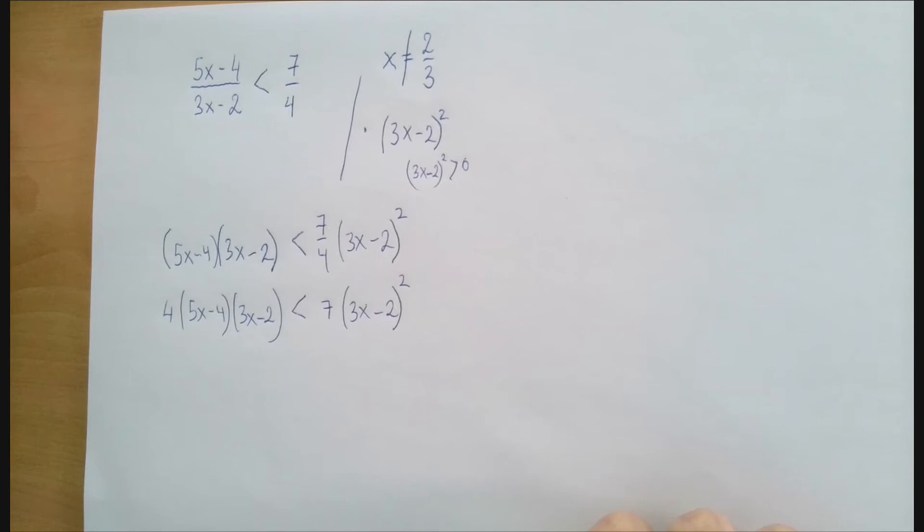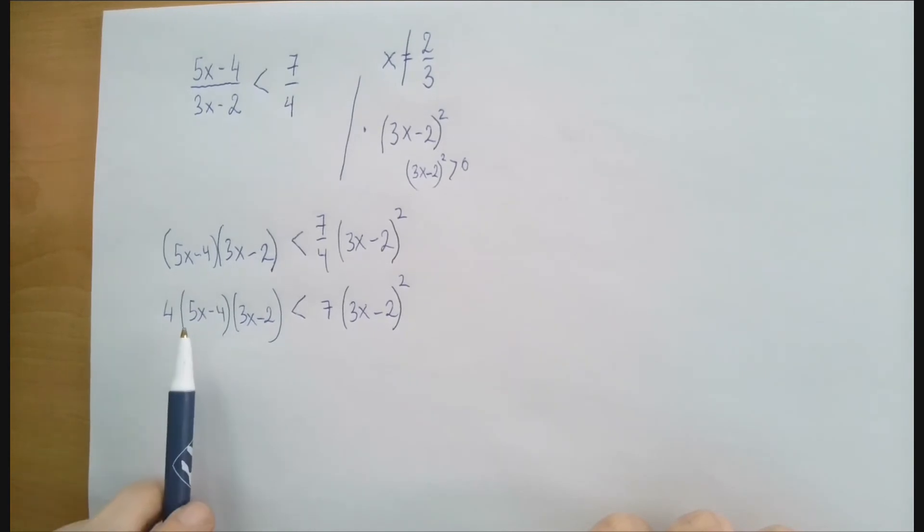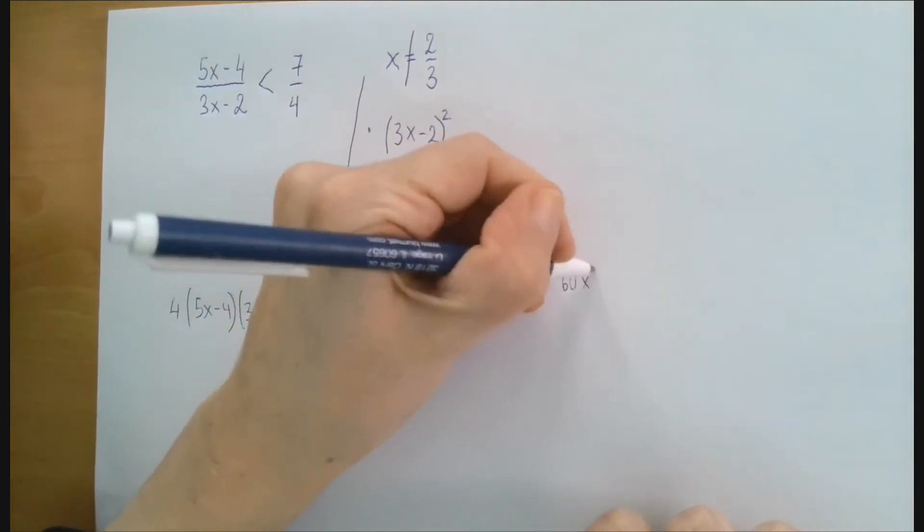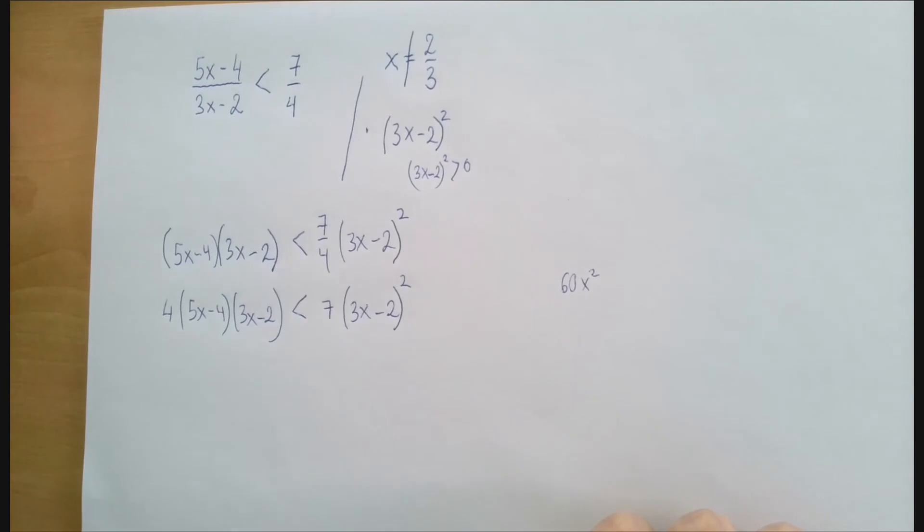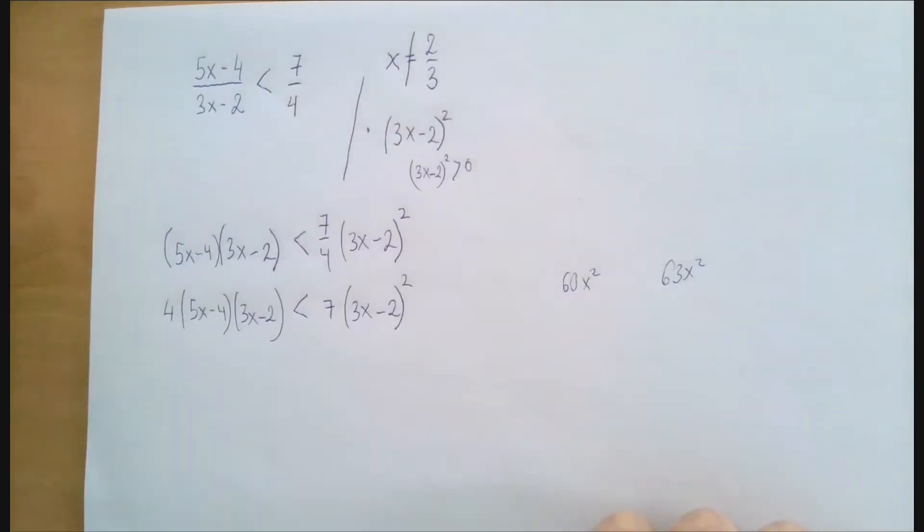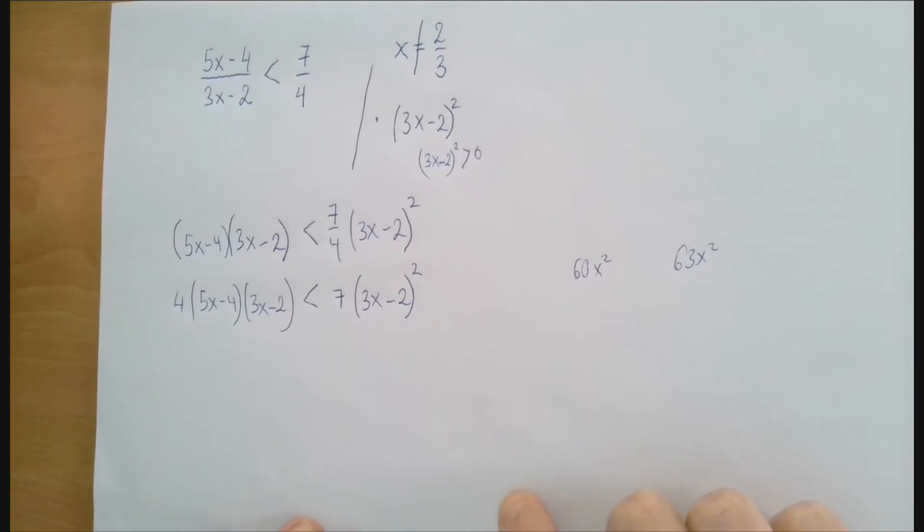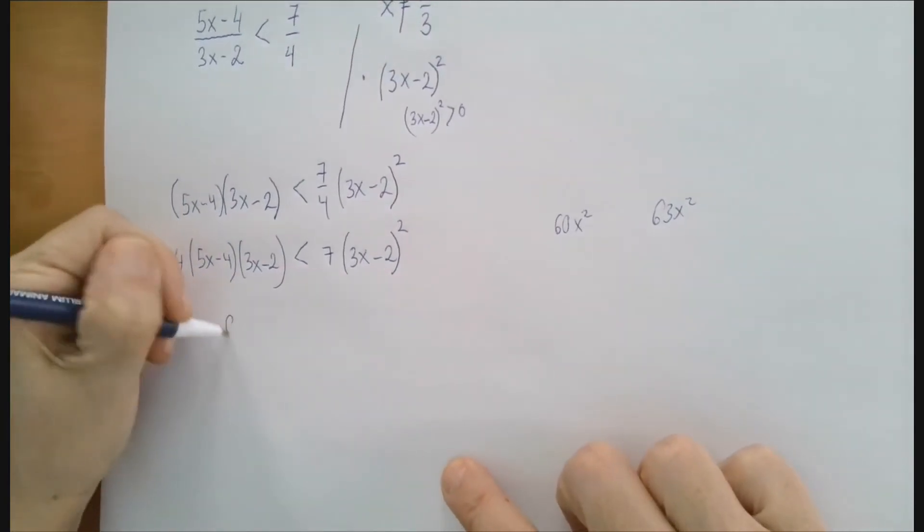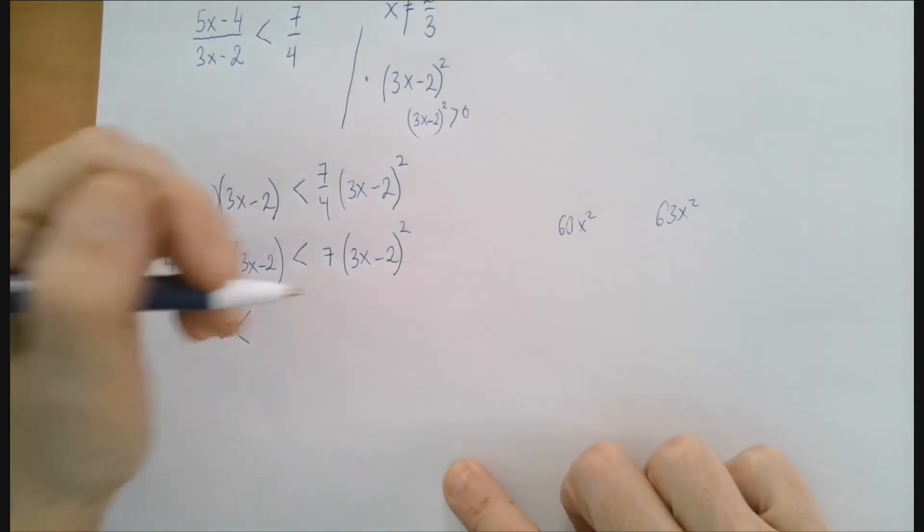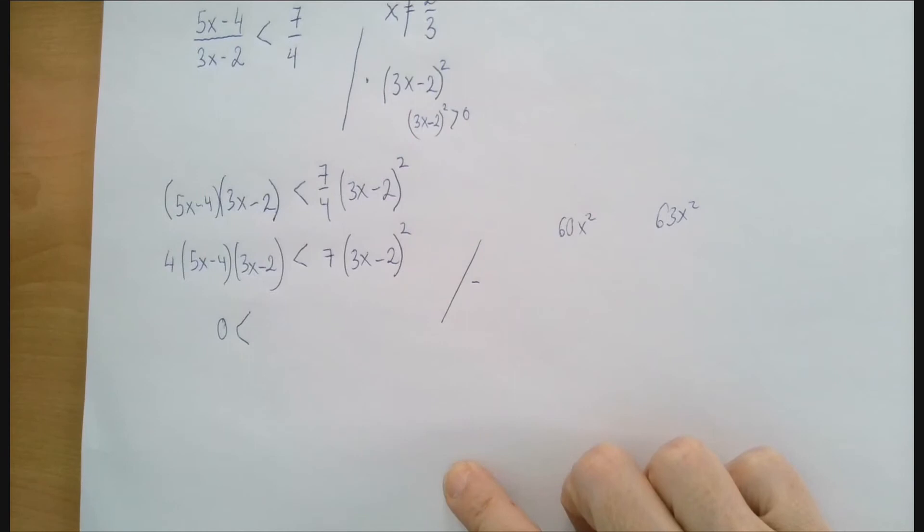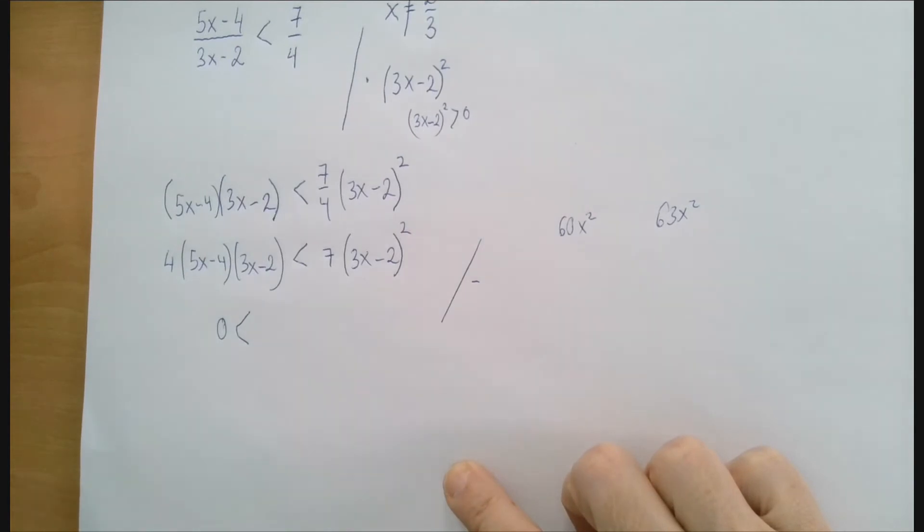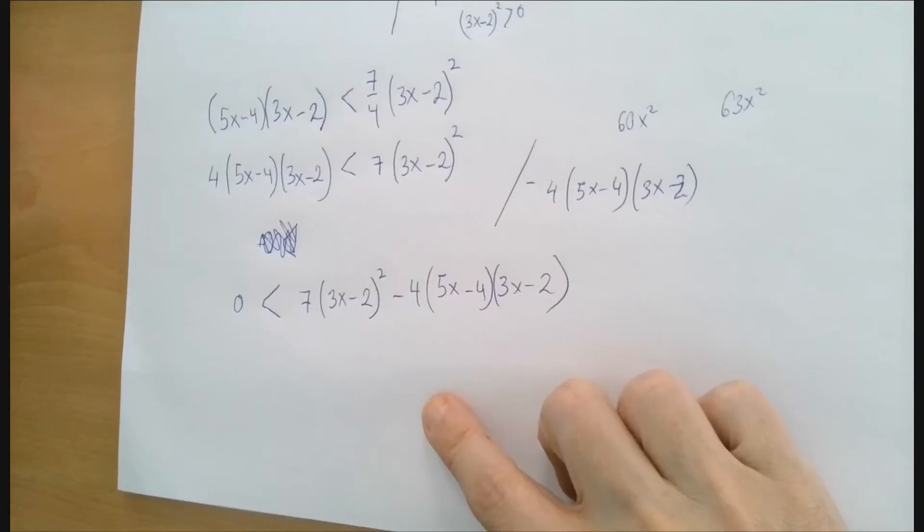If you feel like dividing by it, don't do it. It could be positive or negative. So what we're going to do instead is we're going to wipe out one side to 0 and factor the other side. Now if we investigate the quadratic expressions on the left-hand side, you would get 15 times 4, 60x squared. On the right-hand side, we would get 3 squared is 9, 9 times 7, 63x squared. Between 60x squared and 63x squared, 63 is a greater number, so we will avoid negative leading coefficients if we subtract the expression on the left-hand side. So we're going to subtract 4 times 5x minus 4 times 3x minus 2.